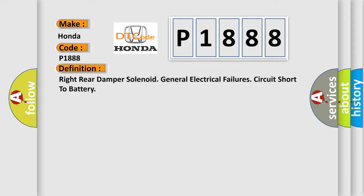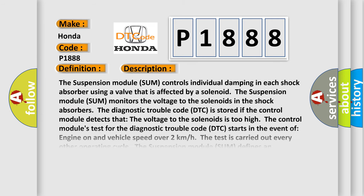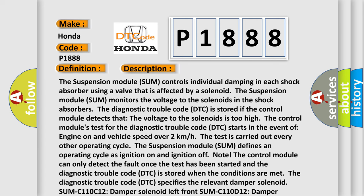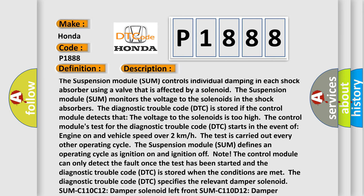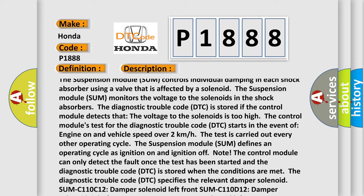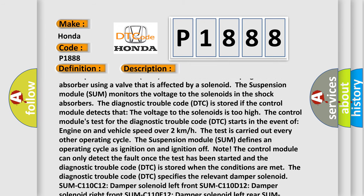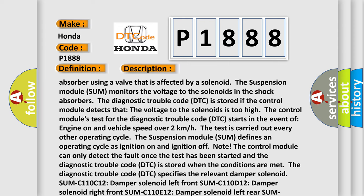And now this is a short description of this DTC code. The suspension module SUM controls individual damping in each shock absorber using a valve that is affected by a solenoid. The suspension module SUM monitors the voltage to the solenoids in the shock absorbers. The diagnostic trouble code DTC is stored if the control module detects that the voltage to the solenoids is too high.